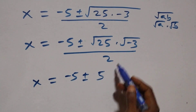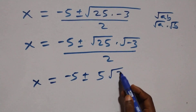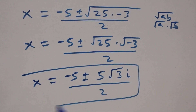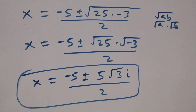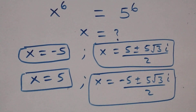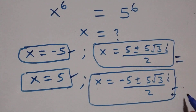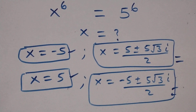We have two complex solutions, and therefore all together in this problem we have six solutions: two real solutions, two complex solutions from the first case, and two complex solutions from the second case. Thank you for watching. Don't forget to subscribe for more videos and turn the notification bell on. Share this video with a thumbs up and put your comments. See you next class, bye for now.